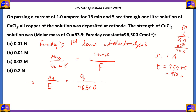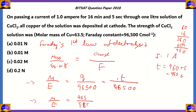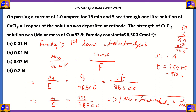We can write Q as I×T divided by 96,500. Therefore, the number of equivalents — that is M/E — is equal to 965 divided by 96,500. So the number of equivalents equals 1 divided by 100. Now we know the number of equivalents, we can calculate the normality of the solution, which gives us the strength of CuCl₂.